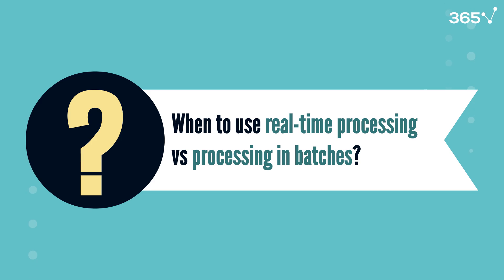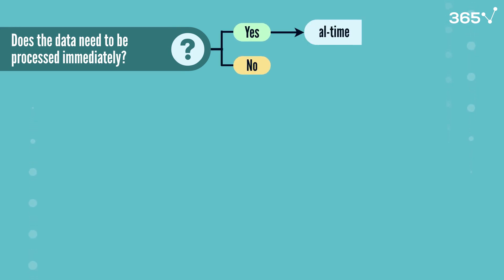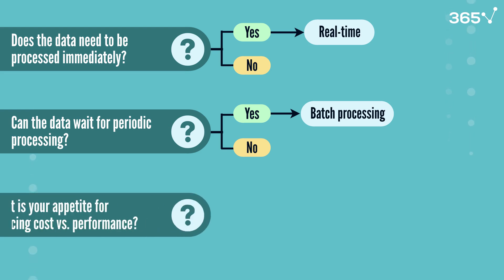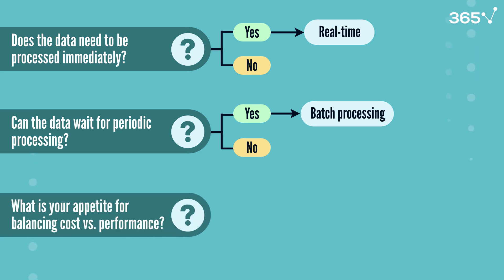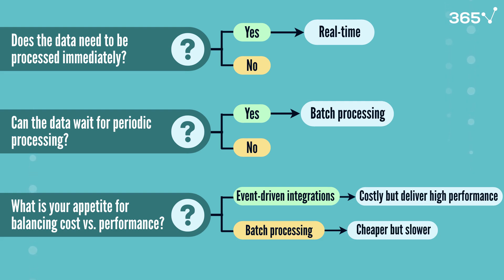How do you decide when to use a real-time processing pipeline versus batch processing? There are some guiding questions that can help. Does the data need to be processed immediately? If yes, go with real-time. Can the data wait for periodic processing? If it can, then batch processing is your answer. And what is your appetite for balancing cost versus performance? Streaming pipelines with event-driven integrations are usually more resource-intensive and costly, but deliver high performance. Batch processing pipelines are cheaper, but also slower in delivering outputs.